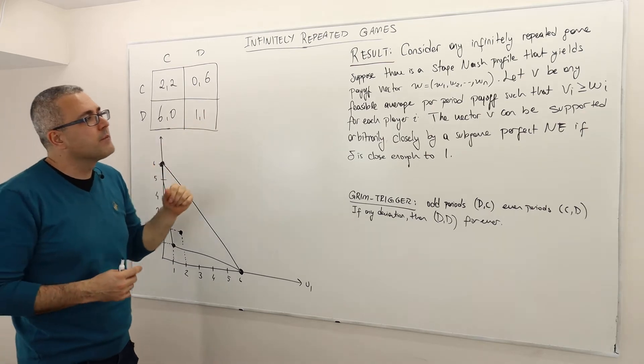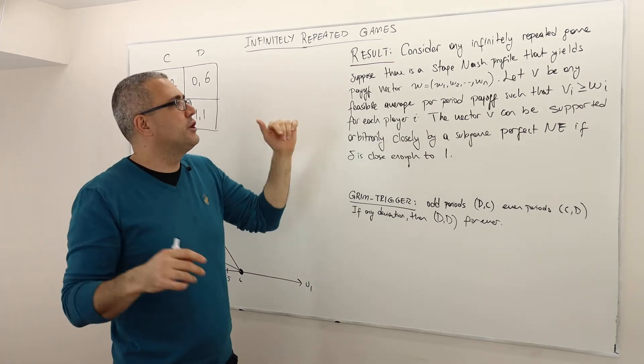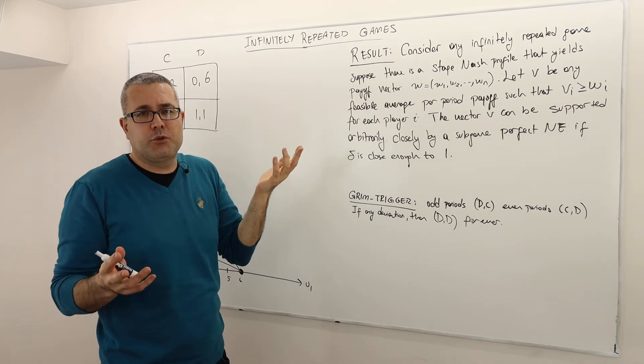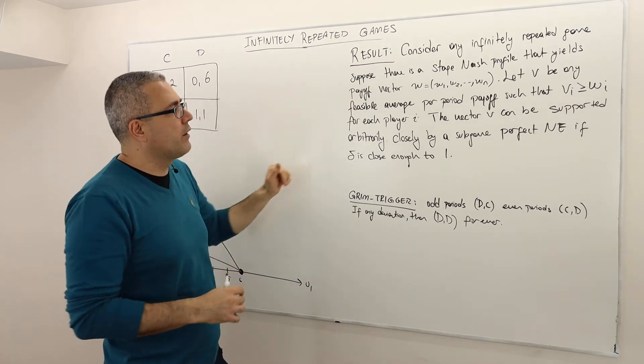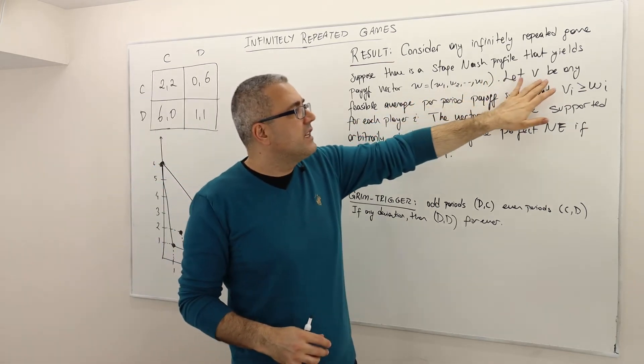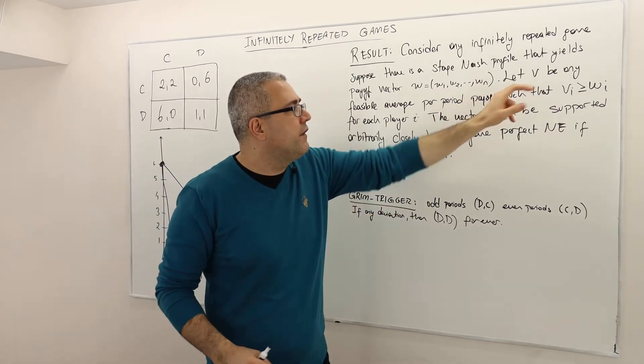Both players get 1, alright? So if there are many Nash equilibria, which payoff vector should I pick? Doesn't matter, just pick one of them. Well, then let's consider another payoff vector, V, but it's feasible.